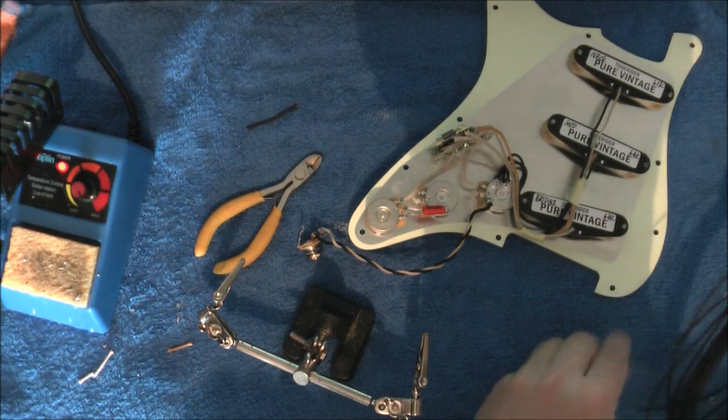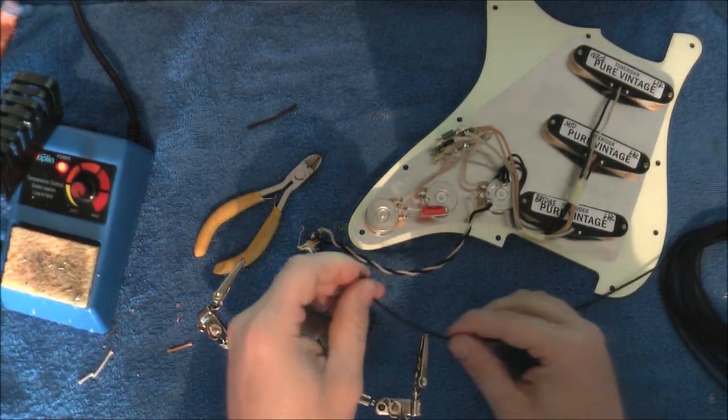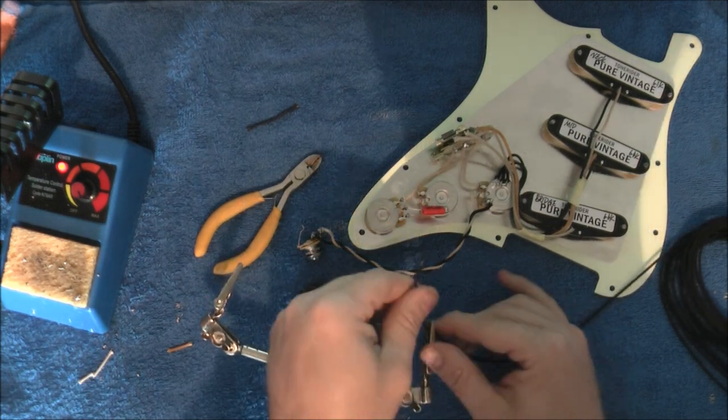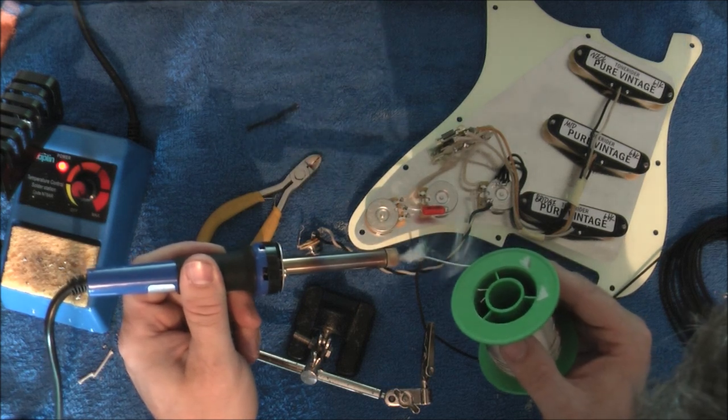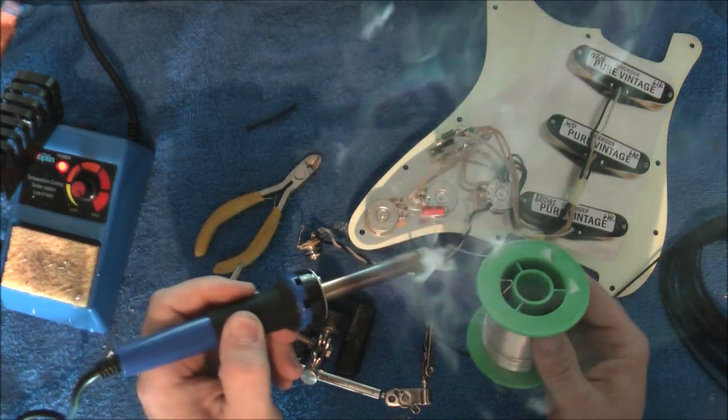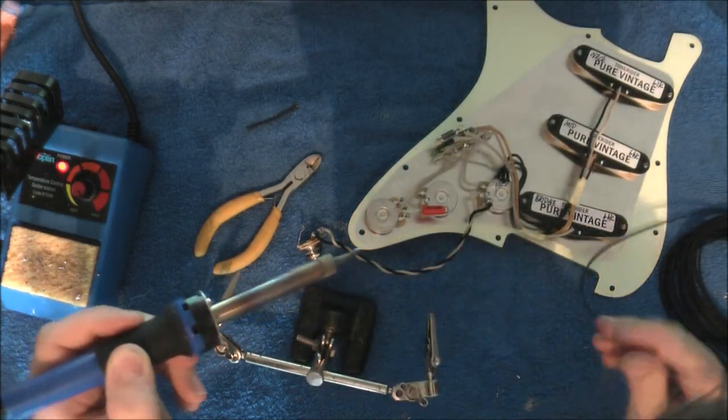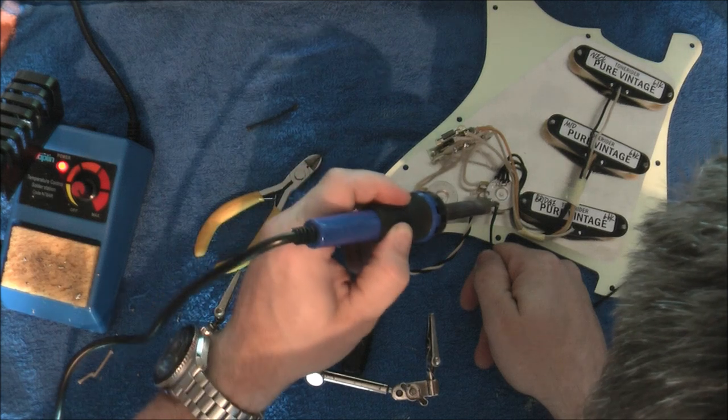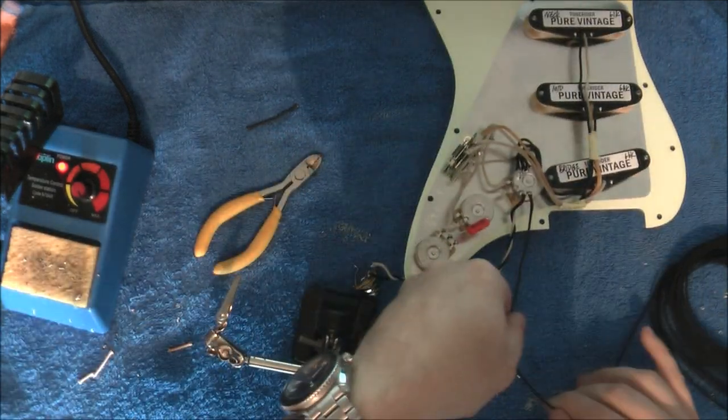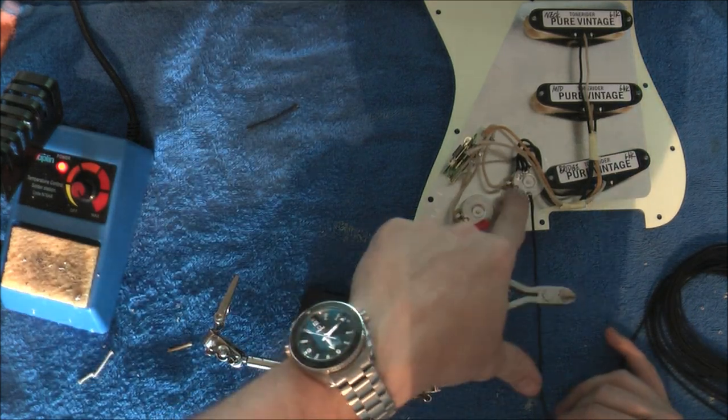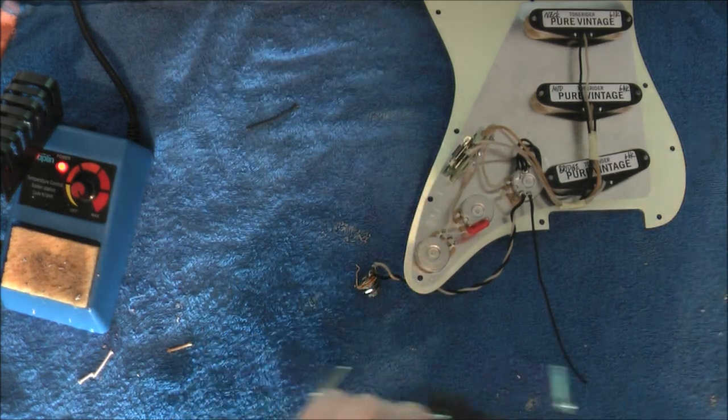And then the final thing is on most strats they have a ground wire that goes to the back of the tremolo claw. So I'm going to attach that ready for the customer. And again that's just going to go to the back of the volume pot. Just about there. There we go. Again. That's going to be too long. I think finger and thumb should be fine. Cut that off. And that is it.